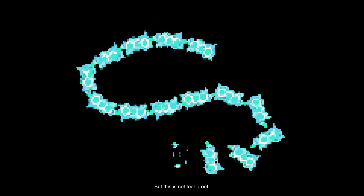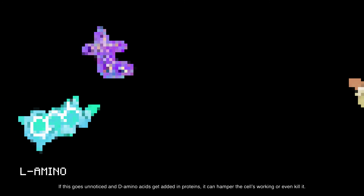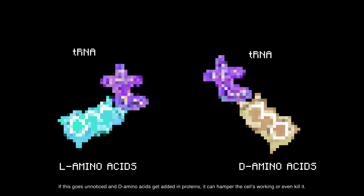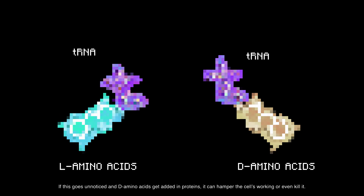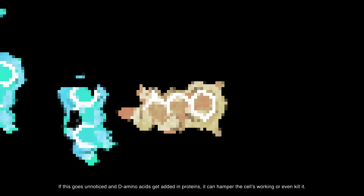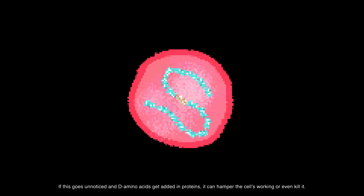But this is not foolproof. Sometimes tRNAs also attach D-amino acids. If this goes unnoticed and D-amino acids get added into proteins, it can hamper the cell's working or even kill it.